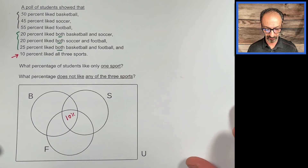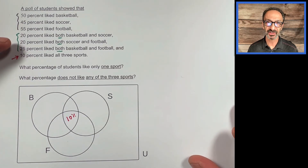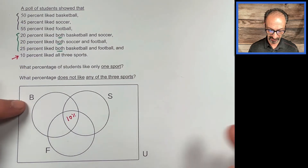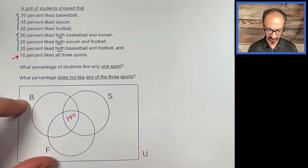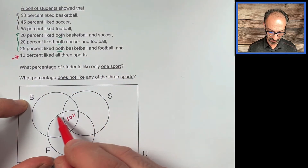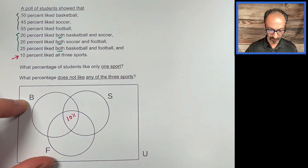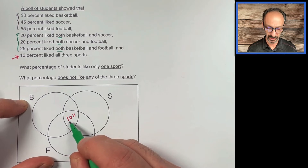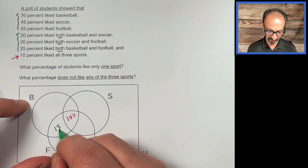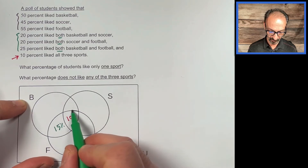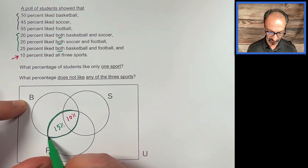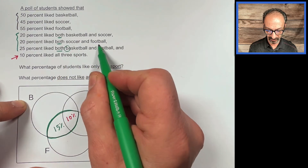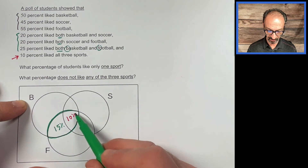Now let's look at the intersections between two sets. 25% liked both basketball and football — that region covers two parts: 10% is already taken by the all-three center, so the remaining region should be 15%. Let's double-check: the intersection between B and F adds up to 25%. Yes, it adds up correctly.